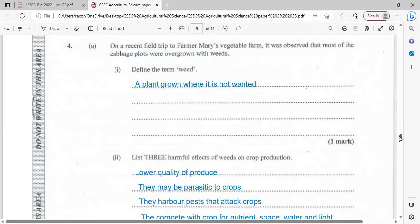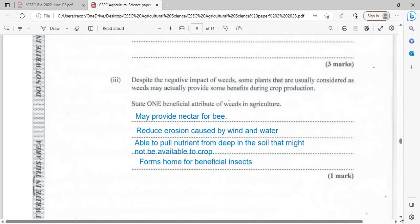Despite the negative impact of weeds, some plants that are usually considered as weeds may actually provide some benefit during crop production. State one beneficial attribute of weeds in agriculture. A weed may provide nectar for bees, hence allowing the bees to make honey, and of course pollen and wax.